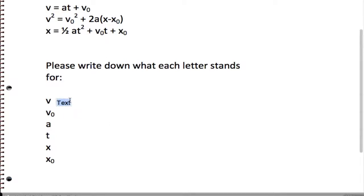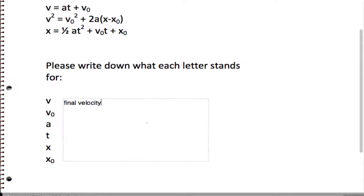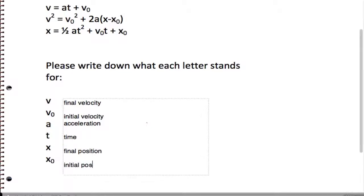The letters stand for the following things. V is the final velocity, V-naught is the initial velocity, A is acceleration, T is time, X is final position, and X-naught is initial position. Those are the basic labelings on the problems.